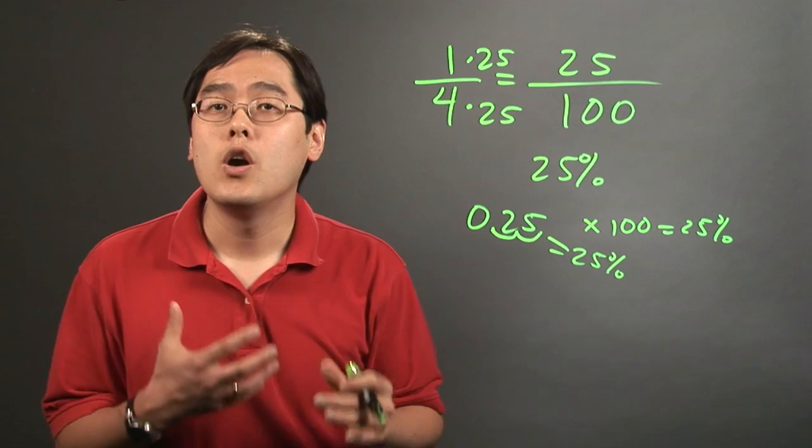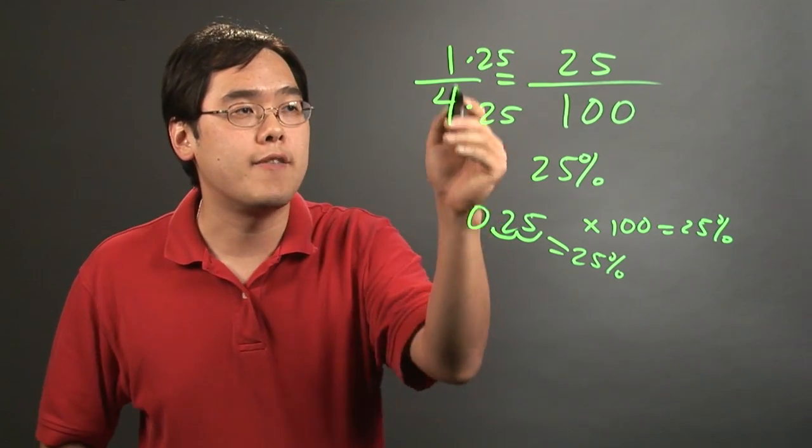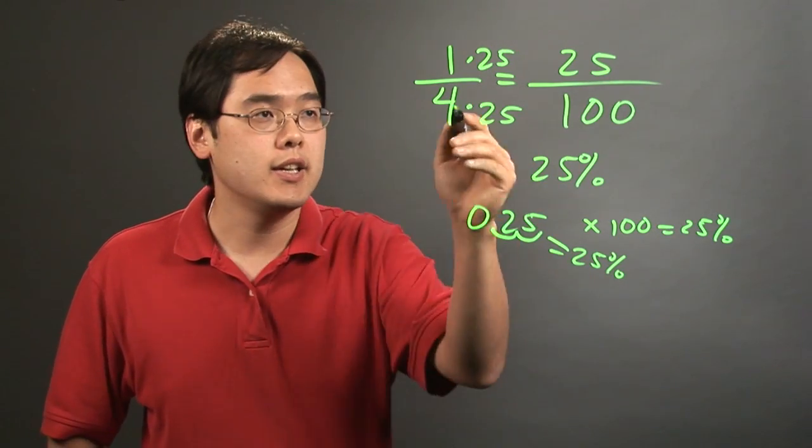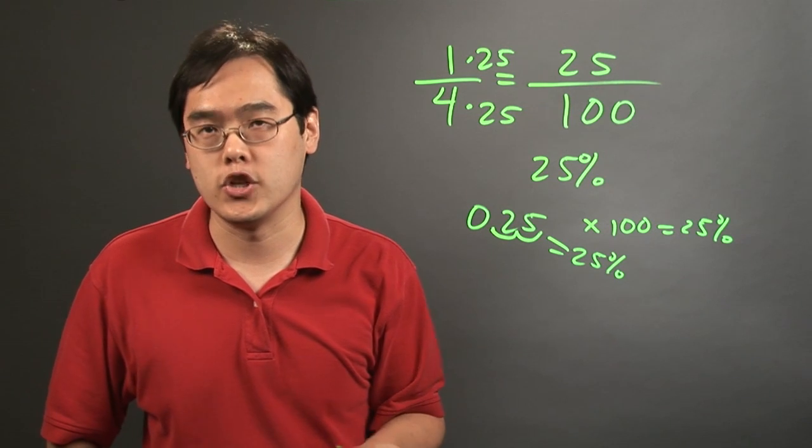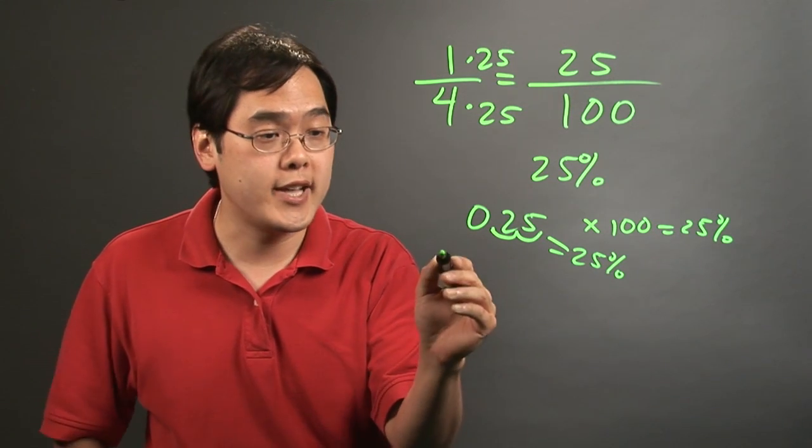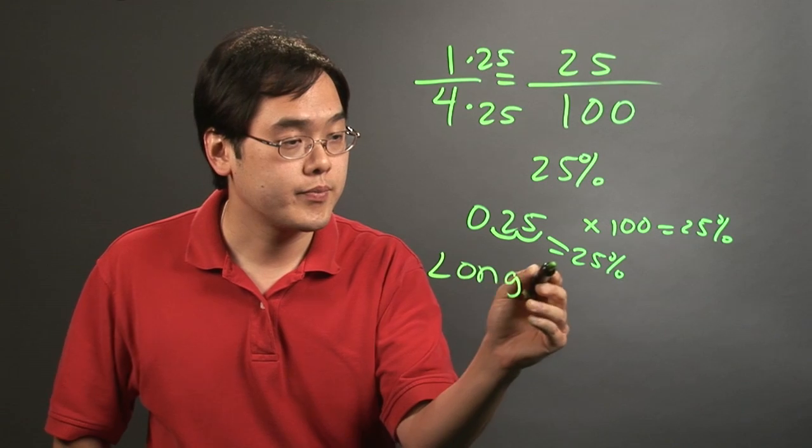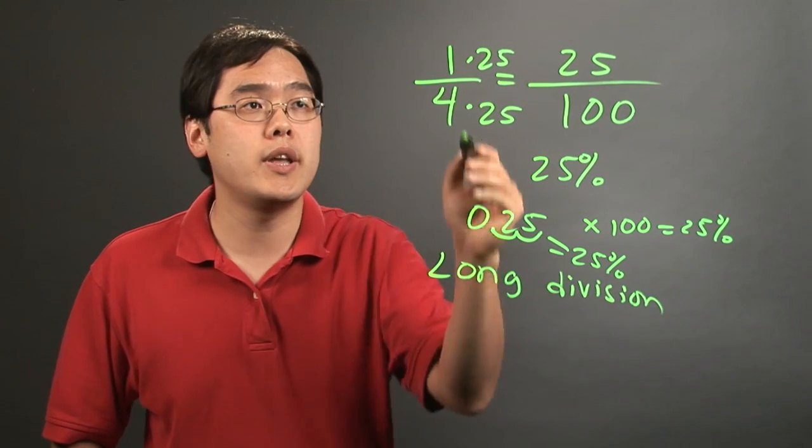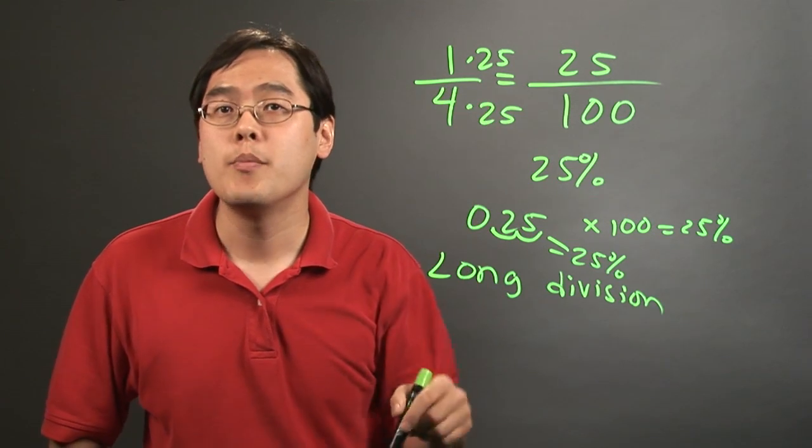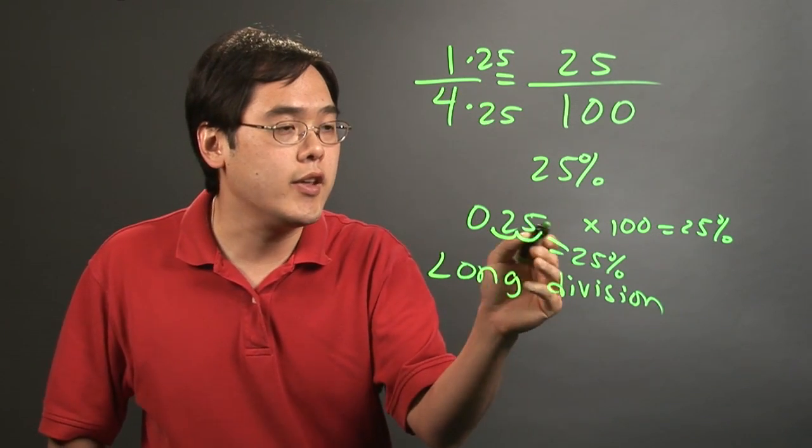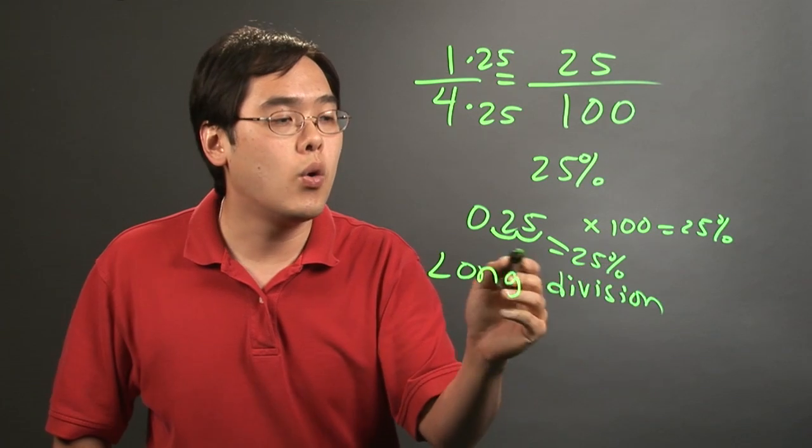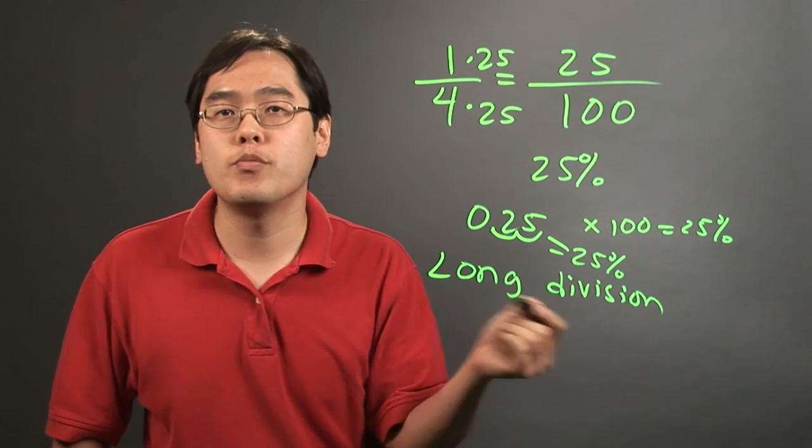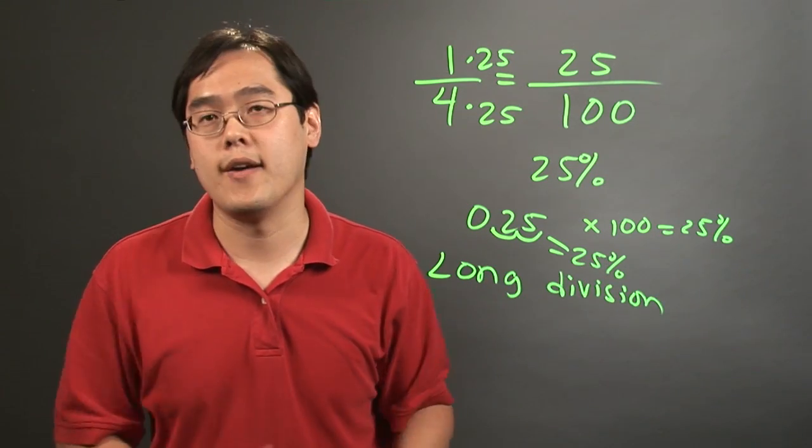Now you may think to yourself, what happens if you have a fraction that doesn't multiply evenly into a hundred? Well, that's where long division is going to be very important. Just go ahead and divide the numerator by the denominator, put the decimal where it needs to be, and then either multiply by a hundred or shift the decimal two places to the right, and you'll have the corresponding percentage.